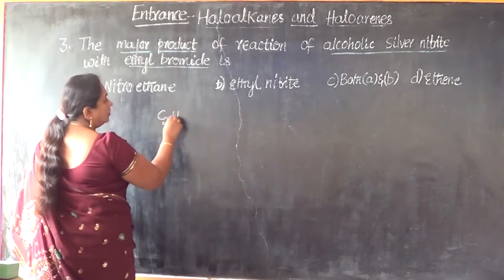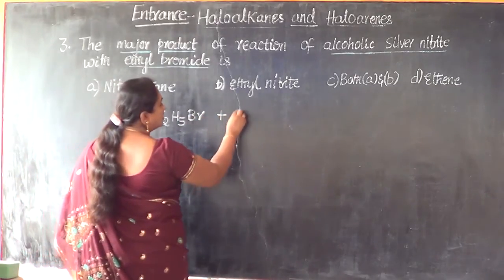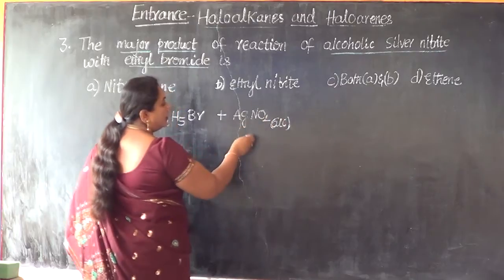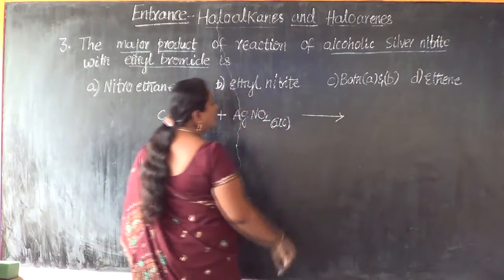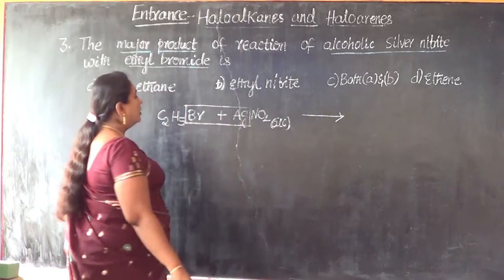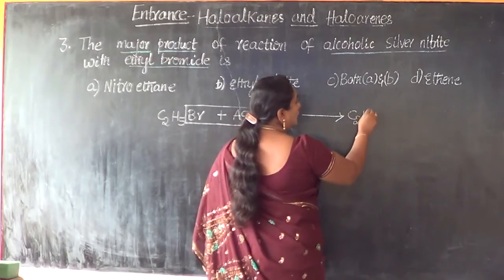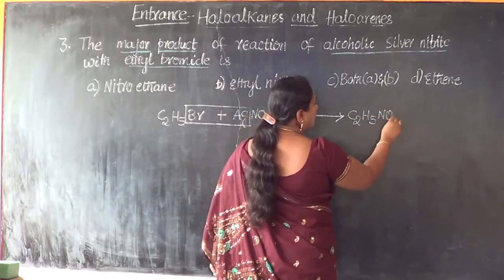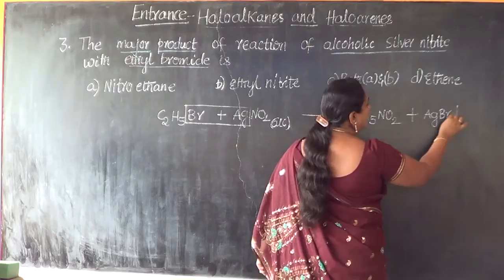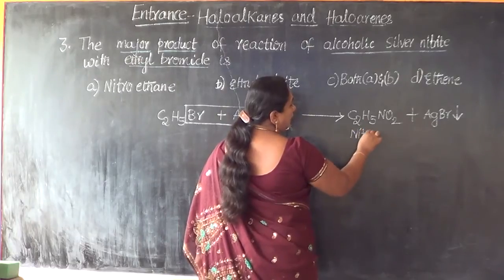Ethyl bromide, C2H5Br, is treated with alcoholic silver nitrite, AgNO2 — either written as AgNO2 (alcoholic) or with ethanol written above the arrow. It will undergo nucleophilic substitution. AgBr leaves and C2H5 combines with NO2, giving C2H5NO2 as one of the major products along with AgBr, which will be precipitated and settle down.